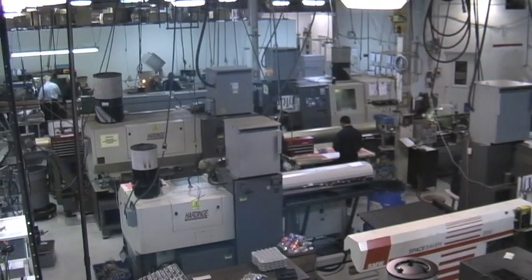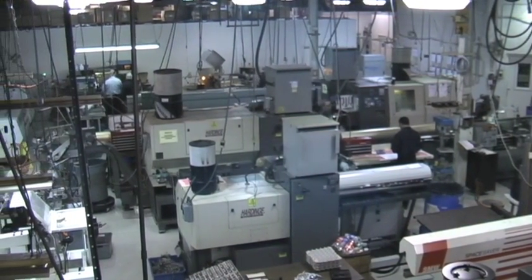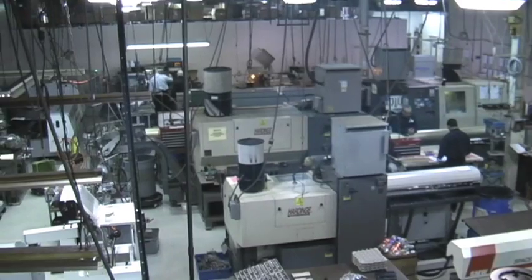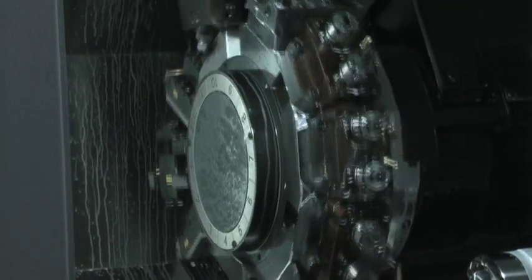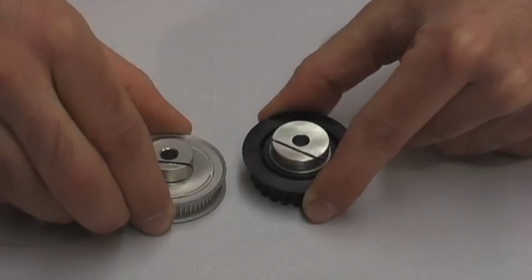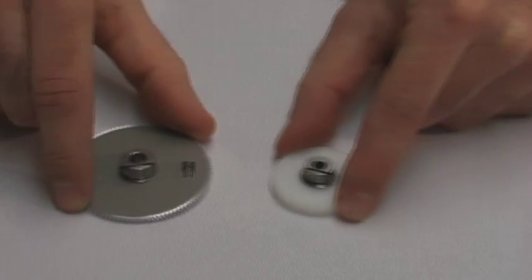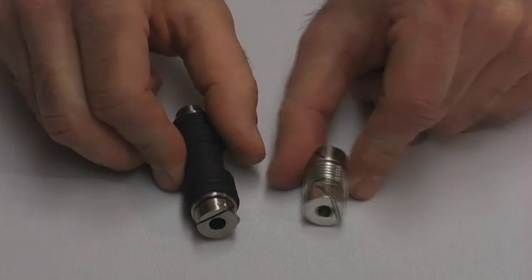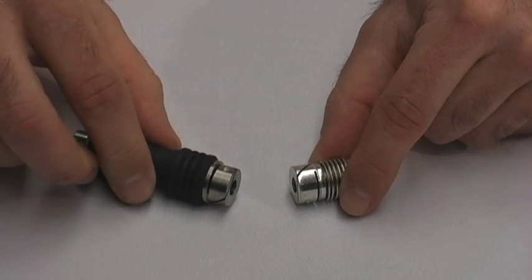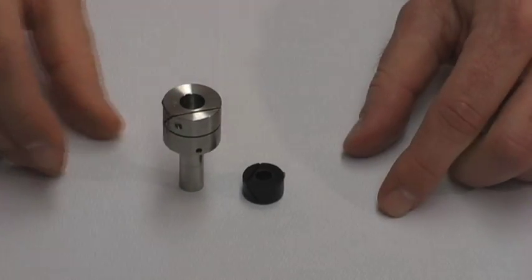Stock Drive Products and Sterling Instrument manufactures and stocks a wide variety of inch and metric components utilizing the Fairlock design such as metal and plastic pulleys, metal and plastic gears, bellows and neoflex couplings, shaft extenders and shaft collars.